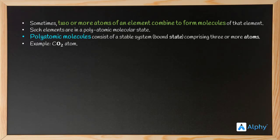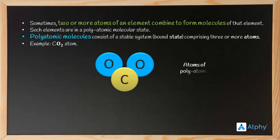CO2 atom has which atoms? One carbon atom and two oxygen atoms. So it has two elements and three atoms total. Atoms of polyatomic element. The carbon is covalently bonded with two oxygen atoms, and we call this polyatomic molecular state.